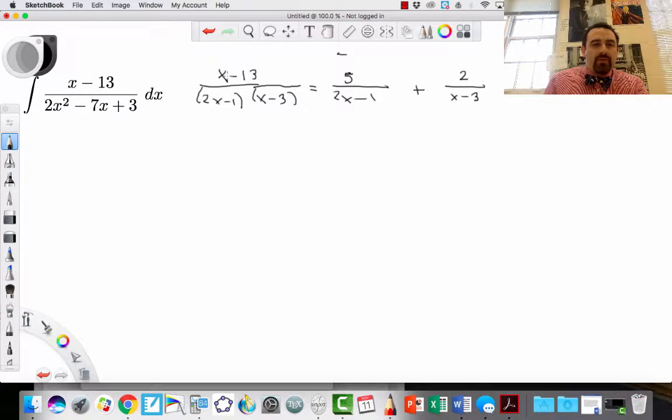Here was our original integral. Here was my partial fraction decomposition. So, instead of integrating this, which I don't really know how to do, I'm going to integrate 5 over 2x minus 1 plus 2 over x minus 3 because those are the same thing.